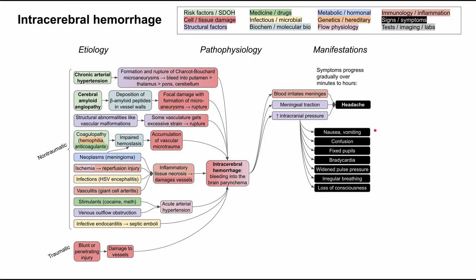Increased intracranial pressure causes nausea, vomiting, confusion, fixed pupils, bradycardia, widened pulse pressure, irregular breathing, and loss of consciousness. Bradycardia, widened pulse pressure, and irregular breathing together make up Cushing's triad — the classic signs of elevated intracranial pressure. In very severe cases, high intracranial pressure can cause brain herniation, which exacerbates many of these symptoms, with loss of consciousness being a major concern when part of the brain herniates through a skull opening.